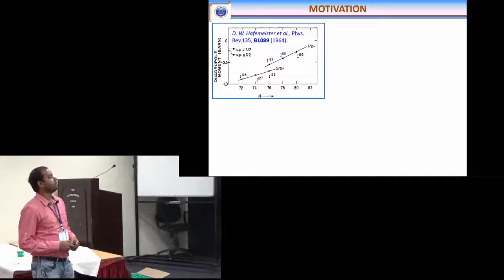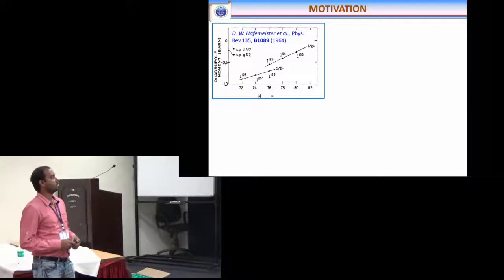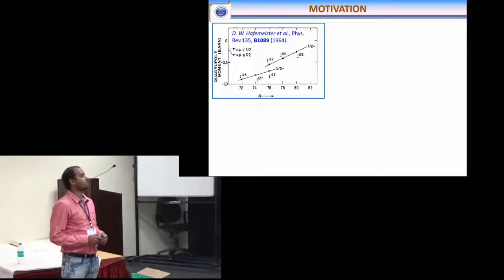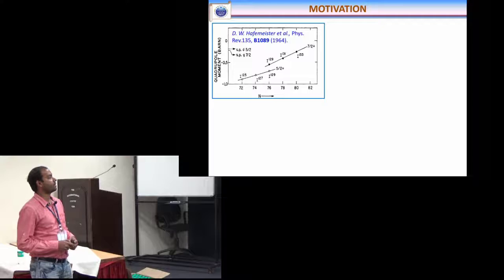There are many anomalies regarding this information. If we extrapolate these two lines, we can see that at equal state 2, the quadrupole moment of 5 plus state is higher than that of 7 plus state, but theoretical calculation which was done in 1964 showed different results.